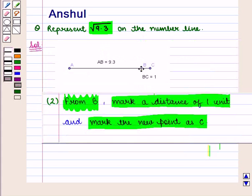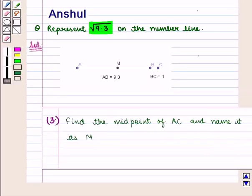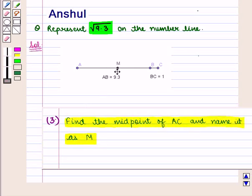That is, from point B we mark a distance of 1 unit and name this new point as C, so that line segment BC is equal to 1 unit. Now we find the midpoint of the line segment AC and name it as M. So point M is the midpoint of line segment AC.